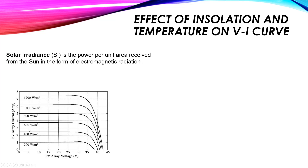So we understand that as the insolation — the irradiation, the power per unit area received from the sun — increases, the power generated from the PV system increases. To find the power, we multiply voltage by current. The maximum power from a PV system is at the knee of the curve, at nearly 35 volts and 7 amperes.